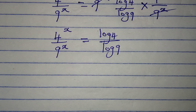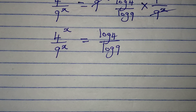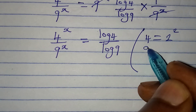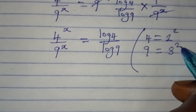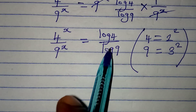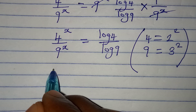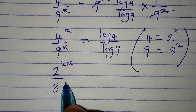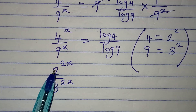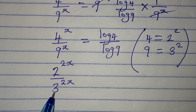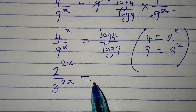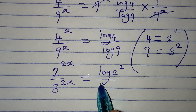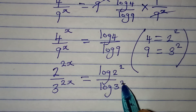From here I want to take a step further. Remember that 4 is the same thing as 2 squared, and 9 is the same thing as 3 squared. Now let's put these values into the problem. So we have 2 to the power of 2x over 3 to the power of 2x, because 4 is 2 squared and 9 is 3 squared. This will equal log 2 squared over log 3 squared.